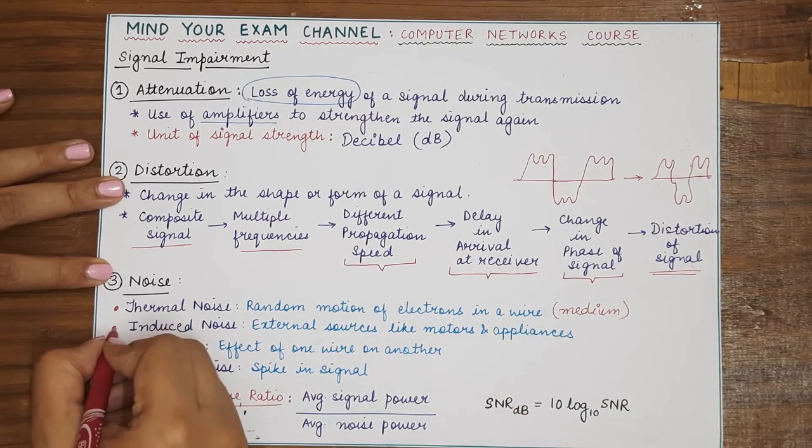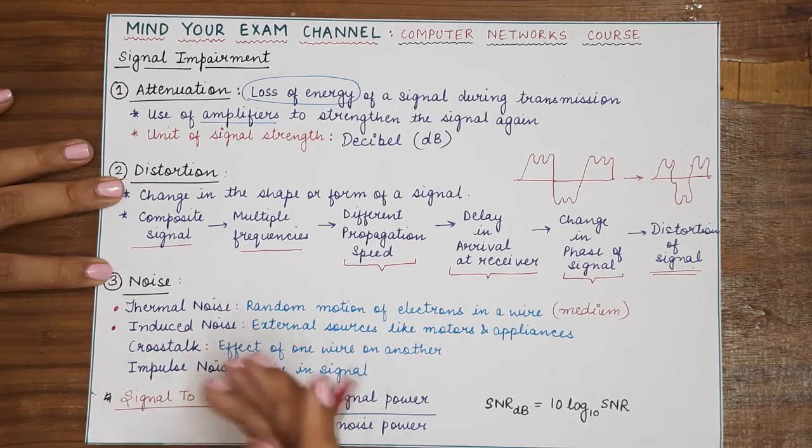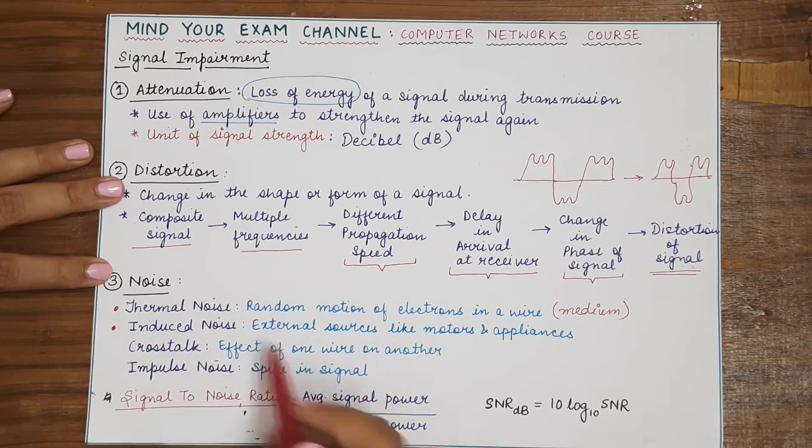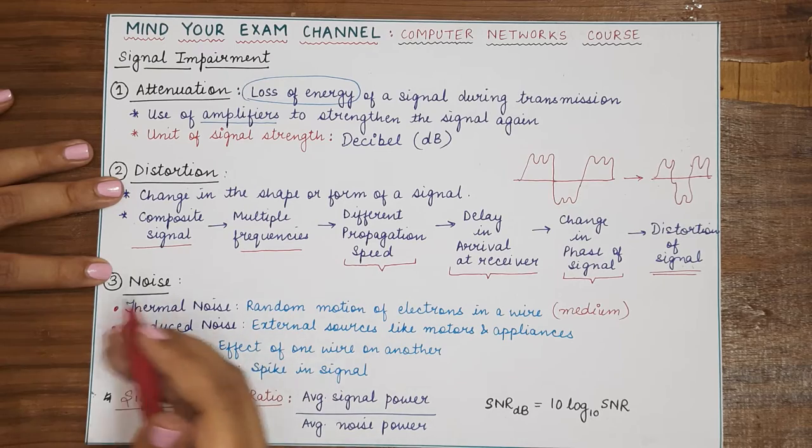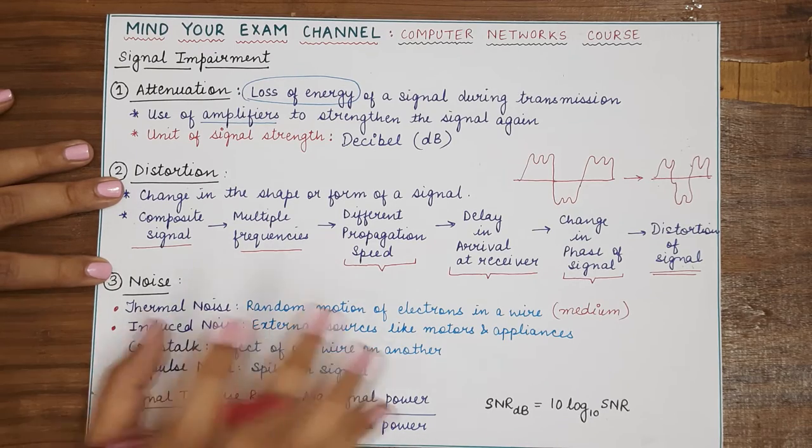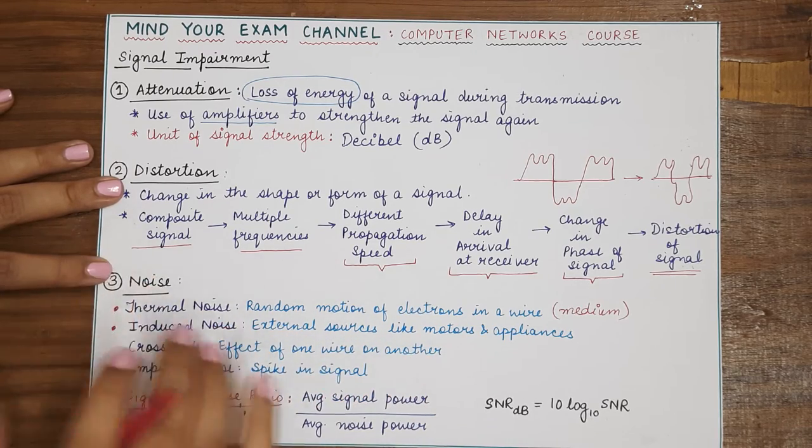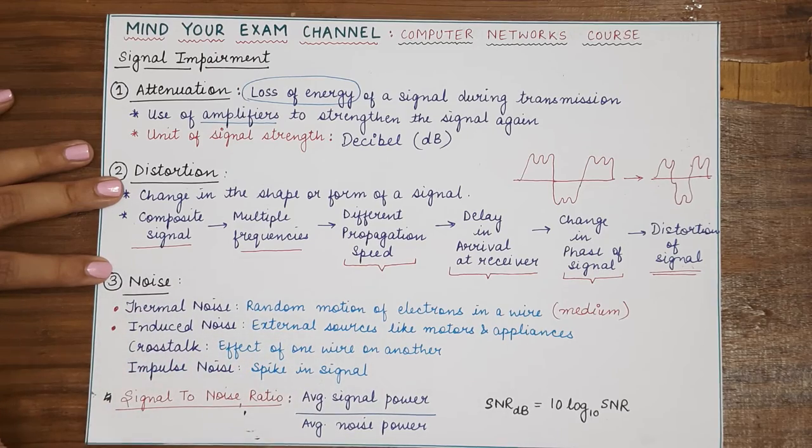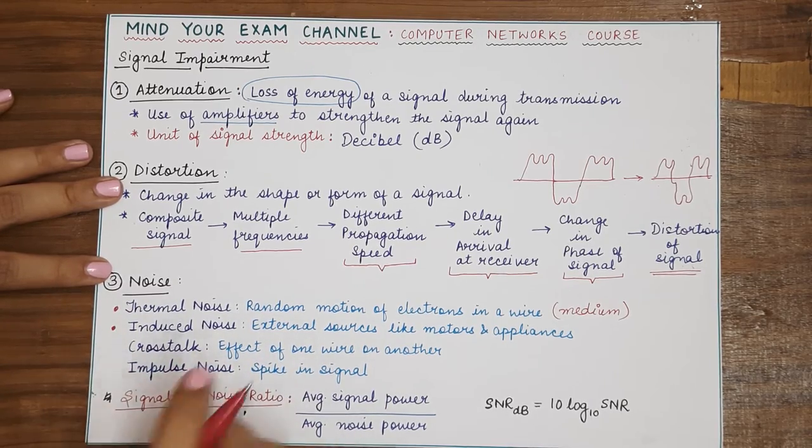Now, the second kind of noise is induced noise. Induced noise comes from external factors like motors or any other appliances or any kind of work going on in the environment where the signal is propagating inside a medium.